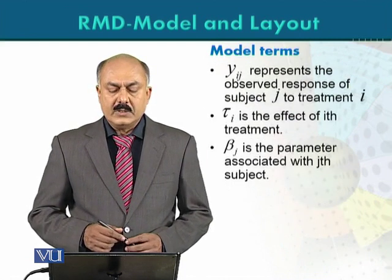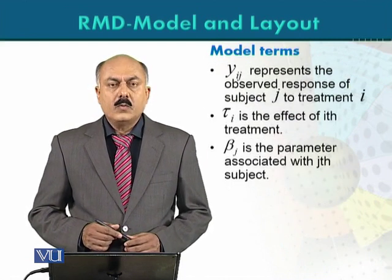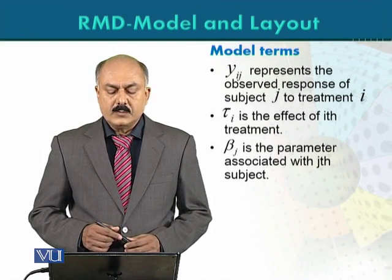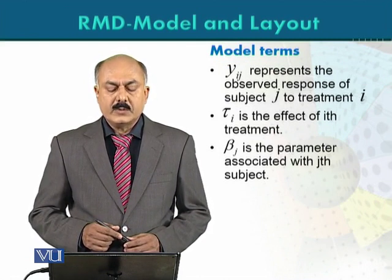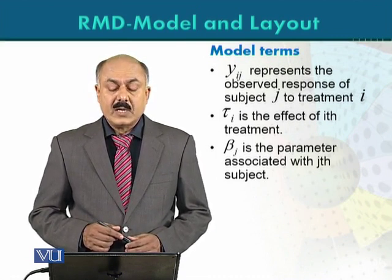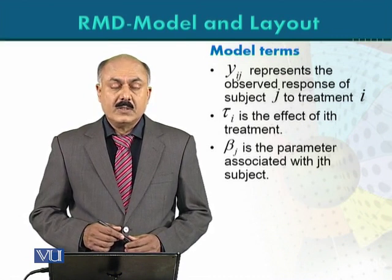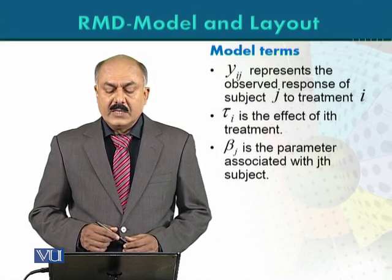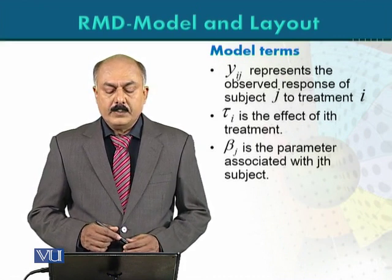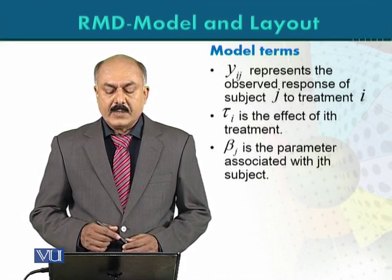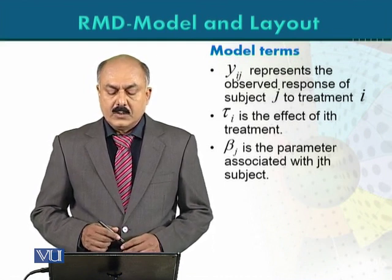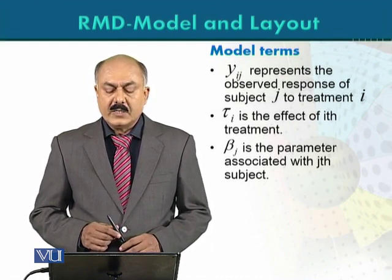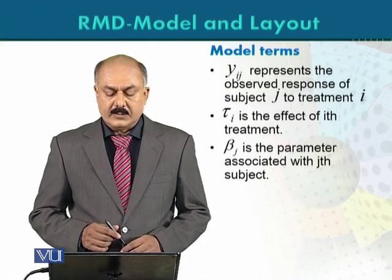We define the model terms individually. Y_ij represents the observed response of subject j to treatment i — when treatment i is applied to subject j, the response received is represented by y_ij. Ta_i is the effect of the i-th treatment, and beta_j is the parameter associated with the j-th subject — that is, beta_j represents the effect of the j-th subject.